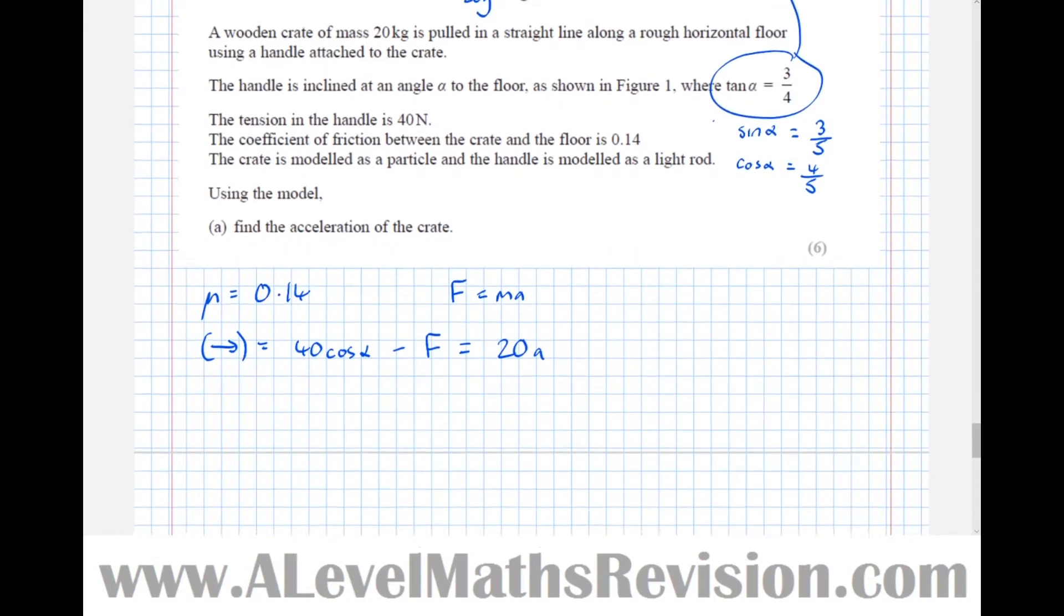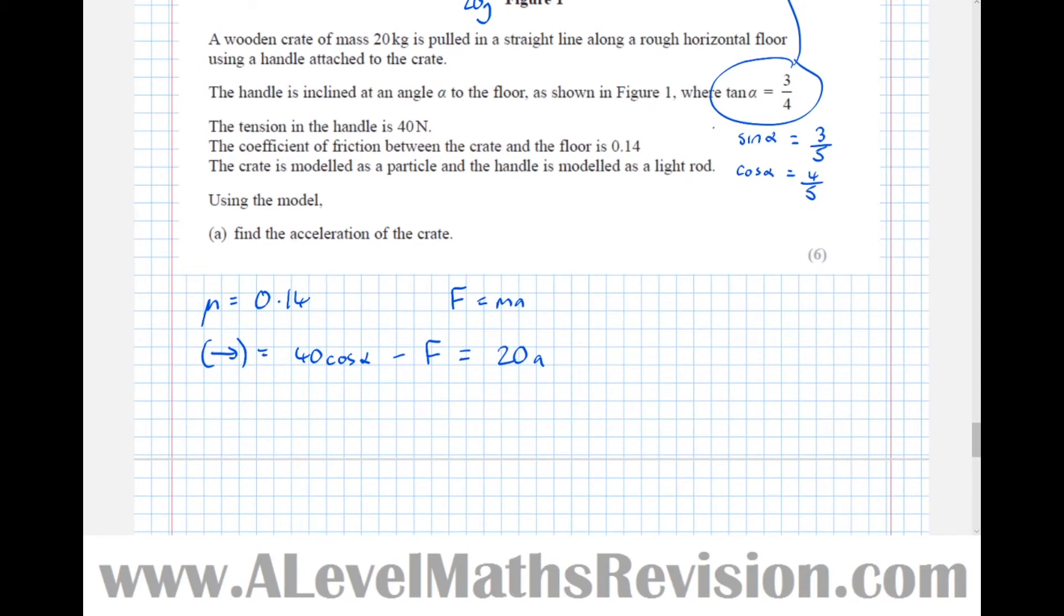Now we can write that a bit better because we worked out before that cos alpha was four fifths. So four fifths of 40 is 32. So 32 take away friction which when it's at its maximum is equal to mu R and mu we've got is equal to 0.14. So 0.14 R equals 20 A. So we've got an equation with two unknowns there. We've got R and we've got A.